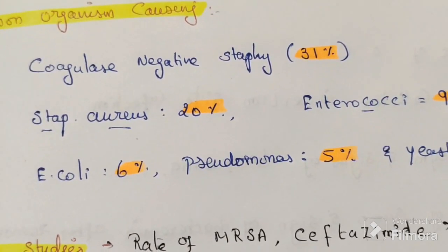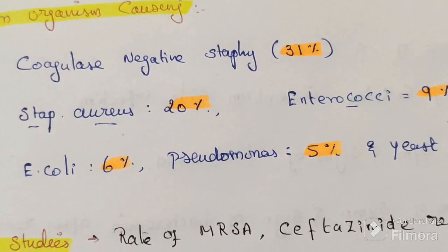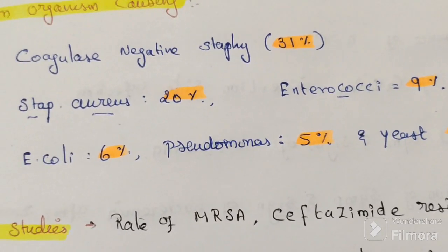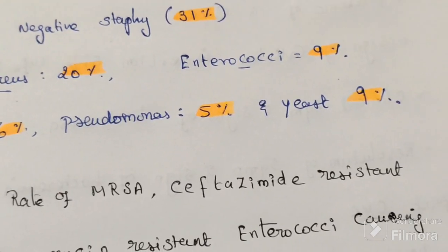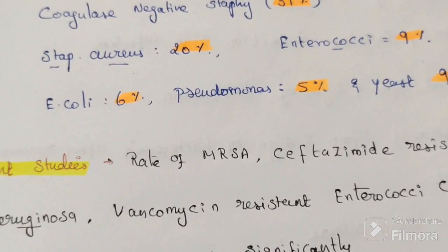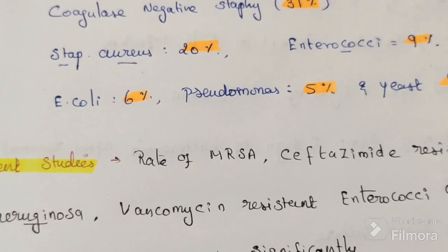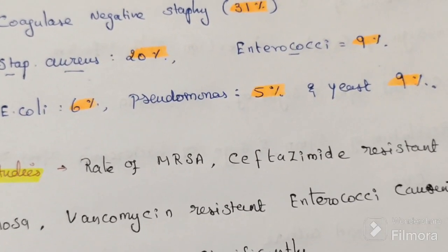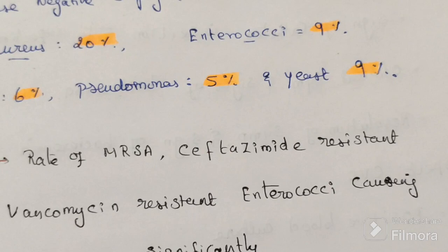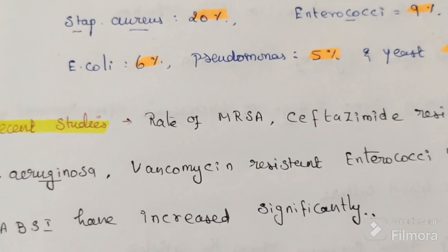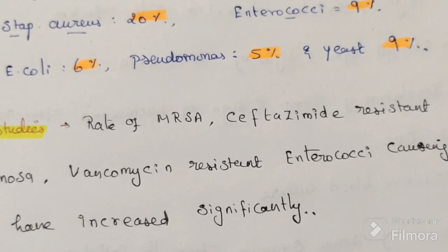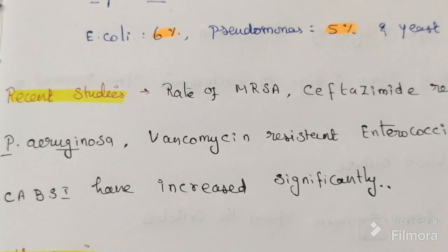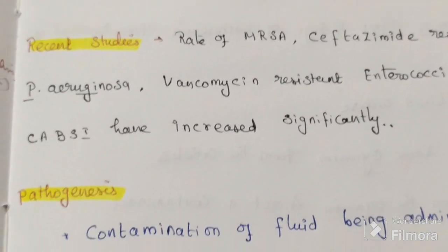Common organisms causing catheter-associated bloodstream infection are: coagulase-negative Staphylococcus 31%, Staphylococcus aureus 20%, Enterococci 9%, E. coli 6%, Pseudomonas 5%, and yeast 9%. Recent studies have shown that rates of methicillin-resistant Staphylococcus aureus, Pseudomonas aeruginosa, and vancomycin-resistant Enterococci have increased significantly.